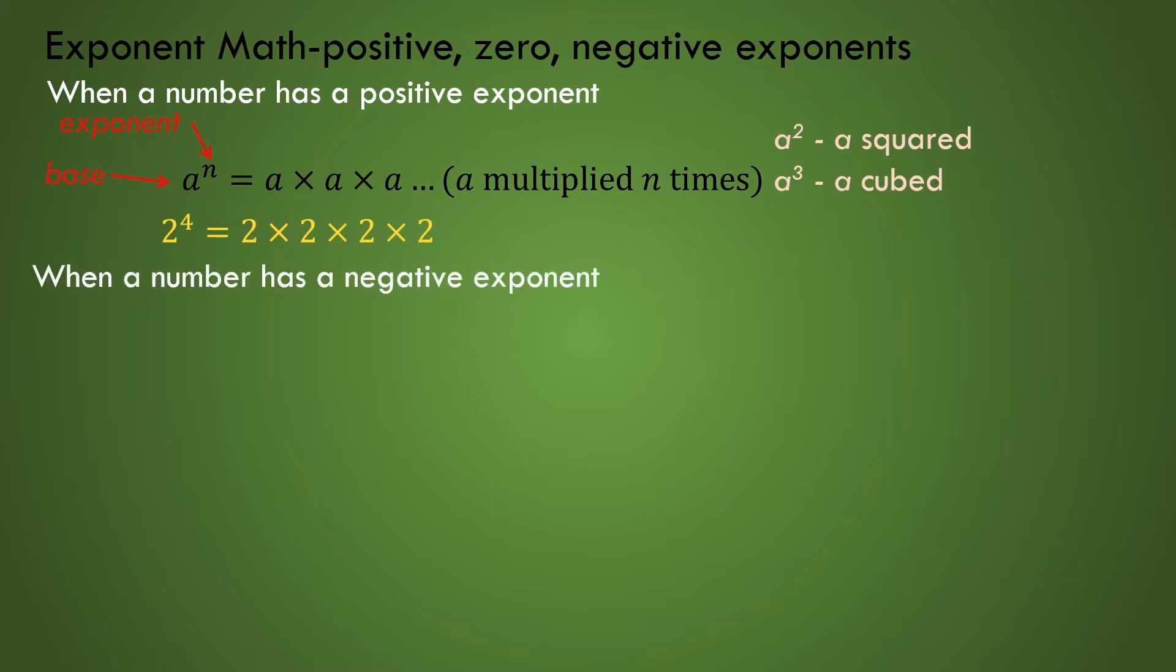When a number has a negative exponent written as a to the power of minus n, the number can be rewritten in its inverse form as shown and now the sign of the exponent on the a variable in the denominator is positive. As we've seen before, if the exponent of a number is ever zero such as a to the 0th power, then the resultant value, no matter the quantity that a represents, will be unity or 1.